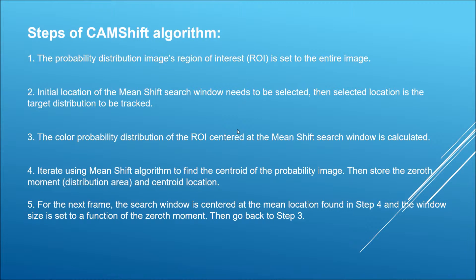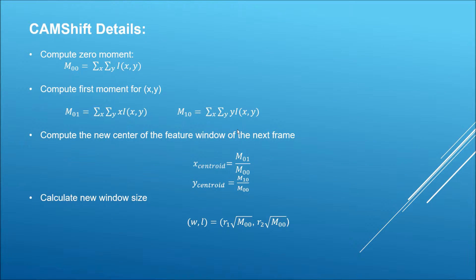The color probability distribution of the region of interest centered at the Mean Shift search window is calculated. Then we activate the Mean Shift algorithm to find the centroid of the probability image and store the zeroth moment and centroid location for the next frame. For all consecutive frames, we search the window location at each frame and adjust it according to the translation of the image with variation in depth of field.